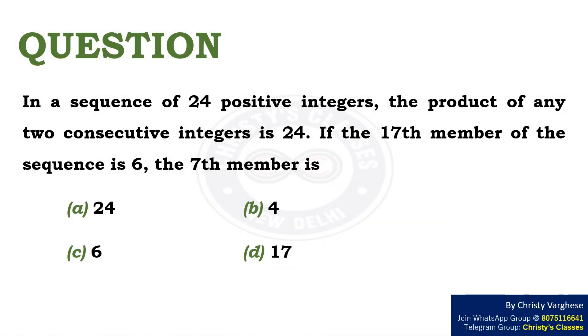In this video, let us discuss a question on sequences. In a sequence of 24 positive integers, the product of any two consecutive integers is 24.